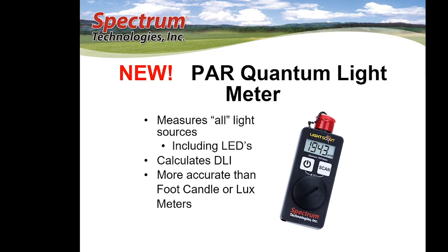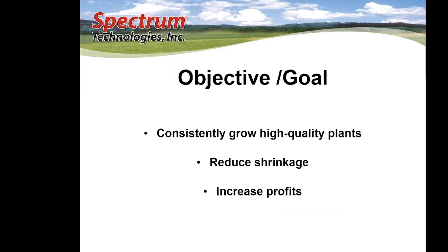In addition, it calculates daily light integral, and it's more accurate than a foot candle or lux meter. The objective of measuring light is to consistently grow high-quality plants and reduce shrinkage — those poor-quality plants that you have to discard.